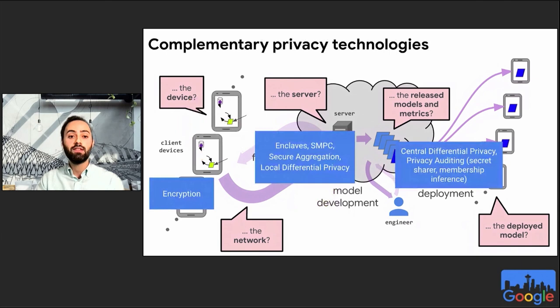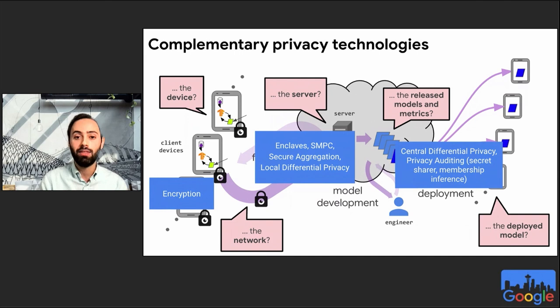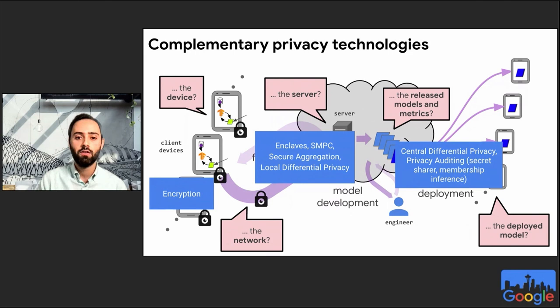To strengthen and formalize privacy guarantees further, complementary technologies can be used — such as encryption, secure enclaves, multi-party computation, and differential privacy. Today's event dives into some of these, including training FL models with differential privacy and touching on multi-party computation and secure aggregation.